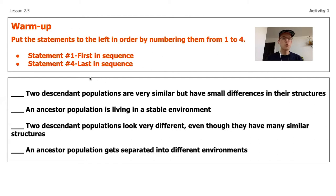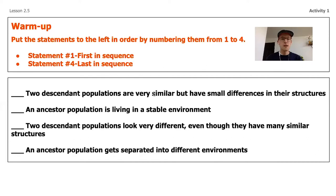On your paper, you're going to start by writing these statements and then putting a number beside them. The numbers indicate the order in which those statements would happen for a species in their own evolutionary history. Number one is the very first thing that happens, and number four is the last — or most recent — thing that would happen in their process of evolution. I'm going to read through these, and as I do, start thinking about what order they go in.